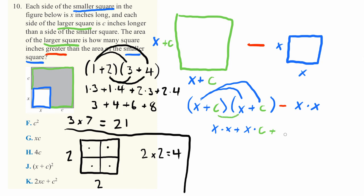I'll switch colors here to represent C, and then plus, now we need to multiply the C term times each of these, so C times X, and then finally we need to multiply together C times C. Now finally we're going to pull down this last term minus X times X.